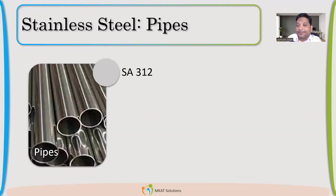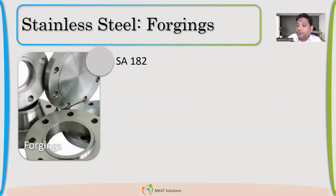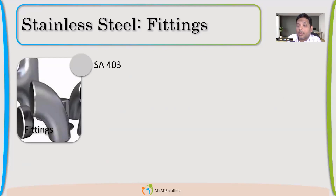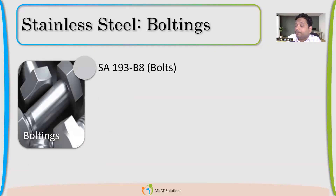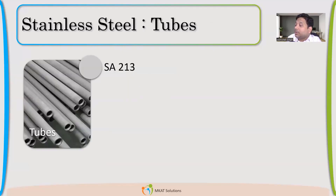For pipe, we have the SA312 specification with all the same grades. For forgings, SA182 and all the same types. For fittings, SA403. For bolting, we have B8, B8M, and B194 for bolts and nuts. For tubes, we have SA213.